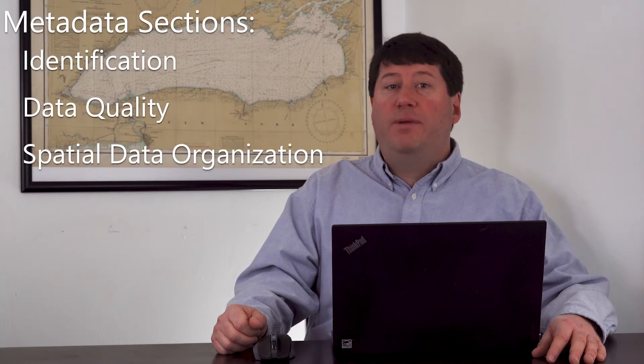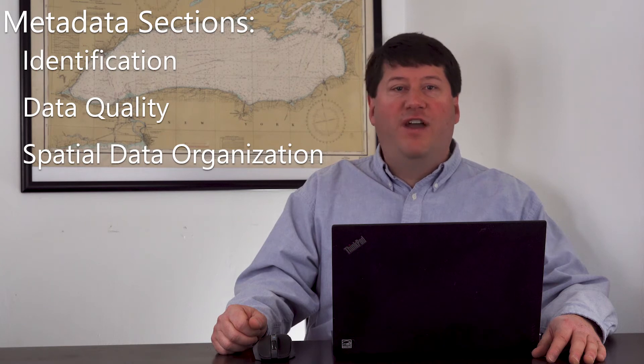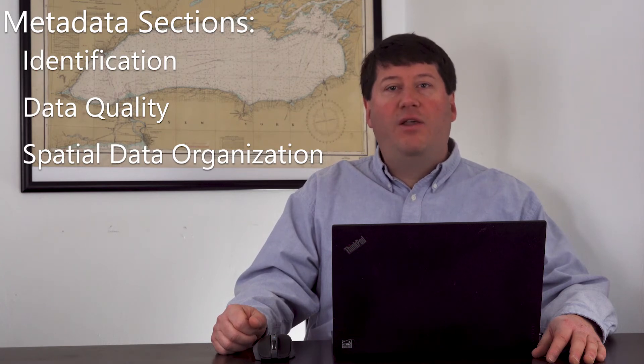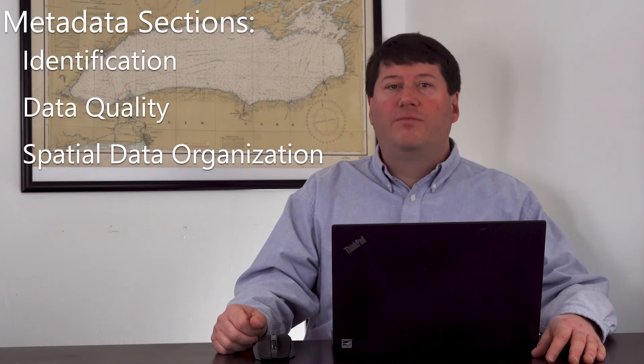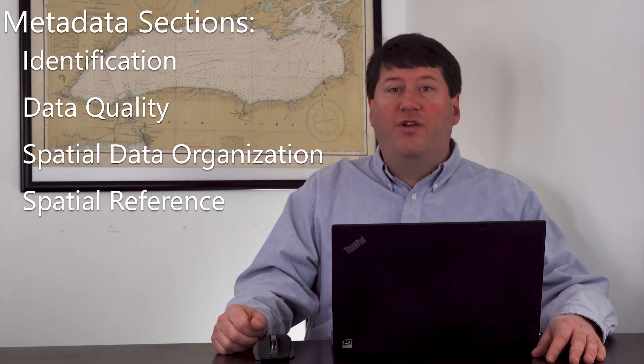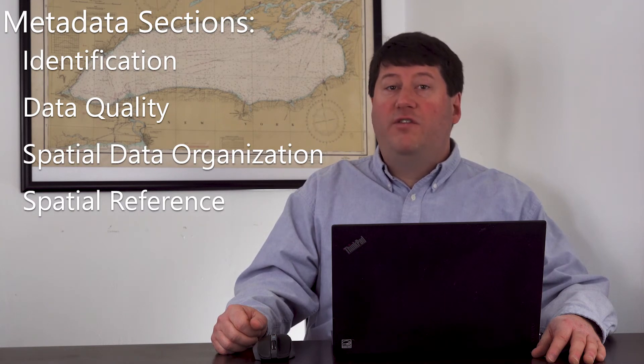Common sections of metadata files include the identification, or what is the dataset; data quality, or how is the data created; spatial data organization, or how is the data represented — such as vector points, lines, and polygons, or raster grid cells, or some other format; and spatial reference, or how is the data spatially referenced in terms of coordinate systems and projections.